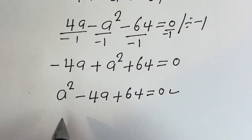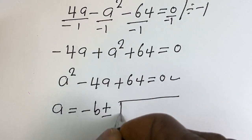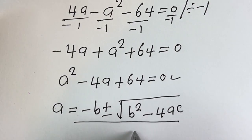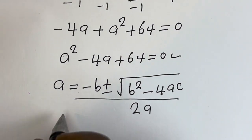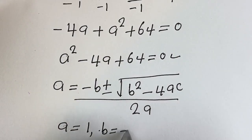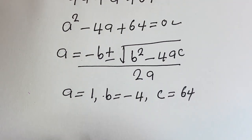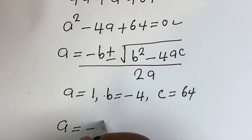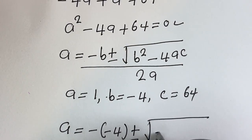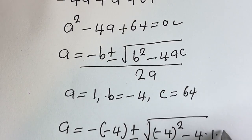Let's solve this using the quadratic formula. A is equal to minus B plus or minus the square root of B squared minus 4AC, everything divided by 2A. Then substituting, A is equal to minus bracket (minus 4) plus or minus the square root of minus 4 squared minus 4 multiplied by 1 multiplied by 64.